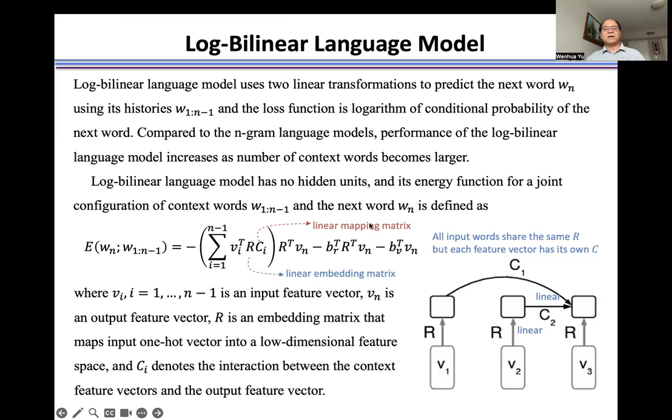Log-bilinear language model has no hidden units. Its energy function for joint configuration of context words and the next word is defined as this function E, where BR and BV are biases associated with two linear layers.